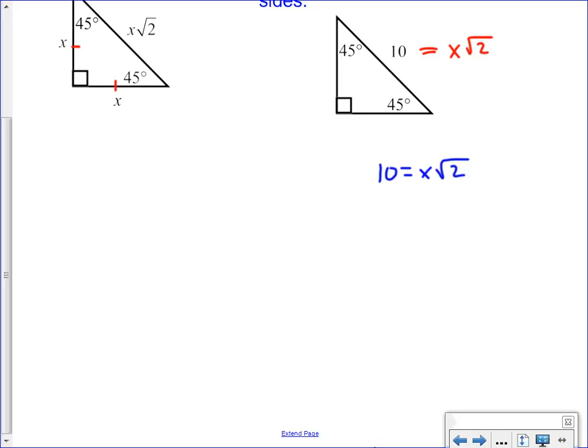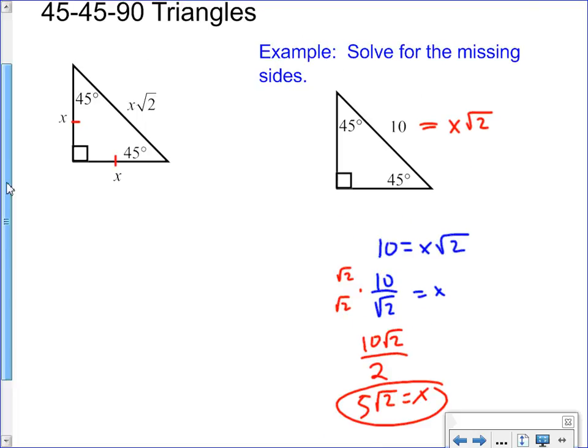So it's 10 over root 2 is equal to x, but you can't have the roots in the denominator. So times root 2, root 2, we have 10 root 2 over 2, a.k.a. 5 root 2 is the x. Remember that the x represents the legs. Therefore, the legs are 5 root 2. Just follow that pattern every time.